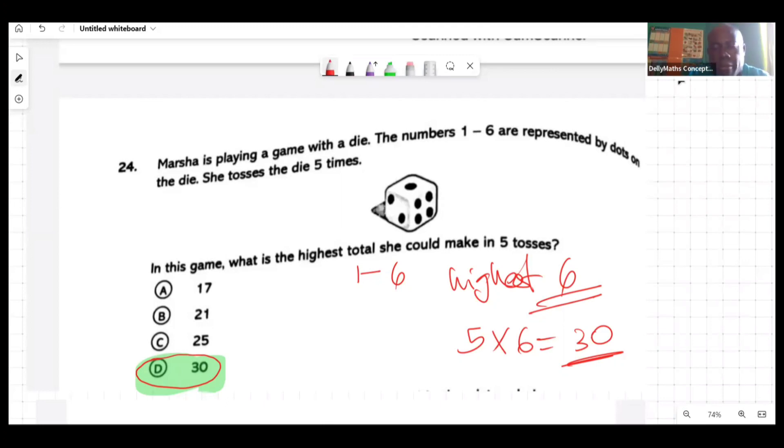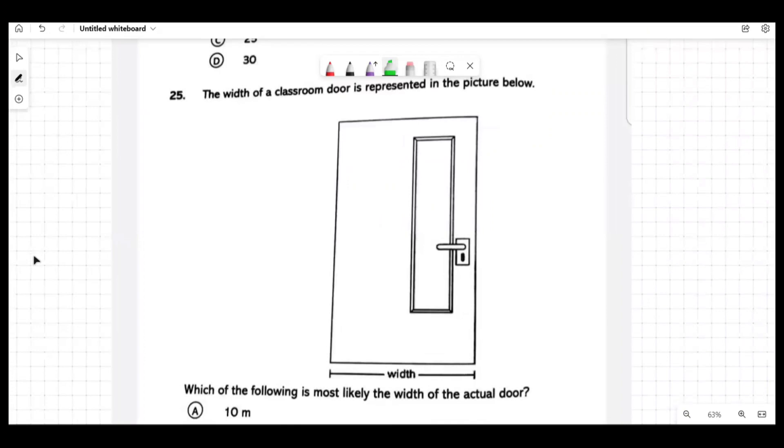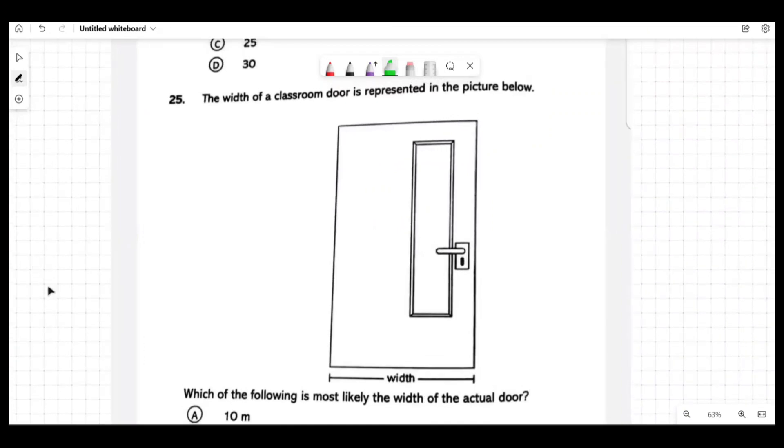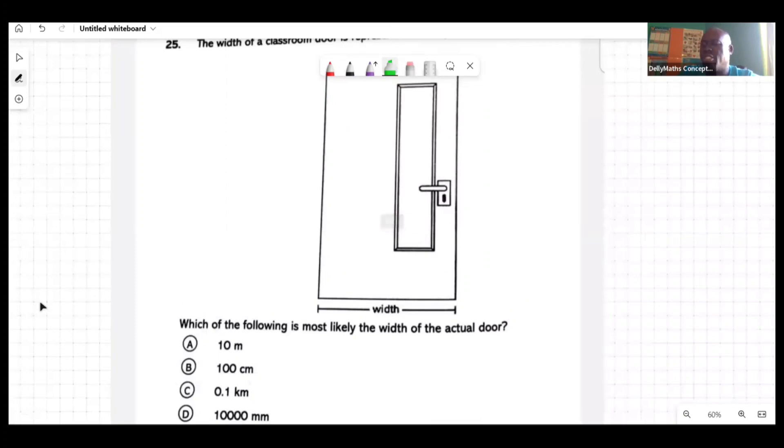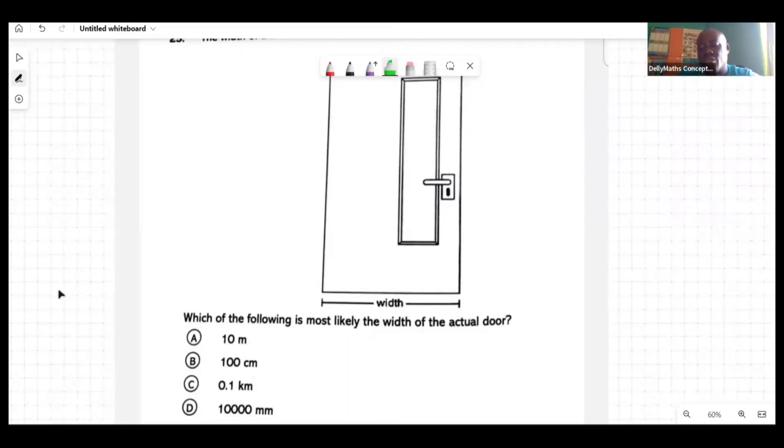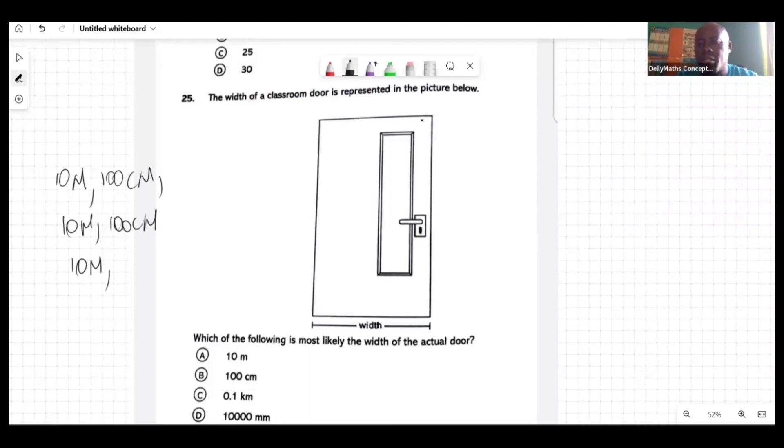The width of a classroom door is represented in the picture below. Which of the following is most likely the width of the actual door? I think what they want to do here is see if you have a good judgment of what these things actually are. If you remember certain things, you can see your door. The width of the door, the length of the door is the longer side, and then the width is the shorter side. Everybody, are you there? Now is it possible for the width of the door to represent the length of one of your hands?